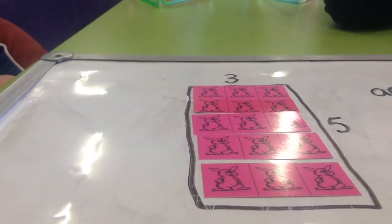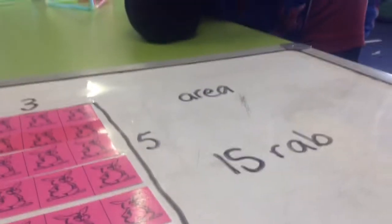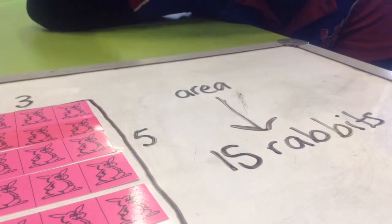So, there's actually fifteen rabbits. Fifteen rabbits. That's our area is fifteen rabbits because that's how many rabbits fill up that square.